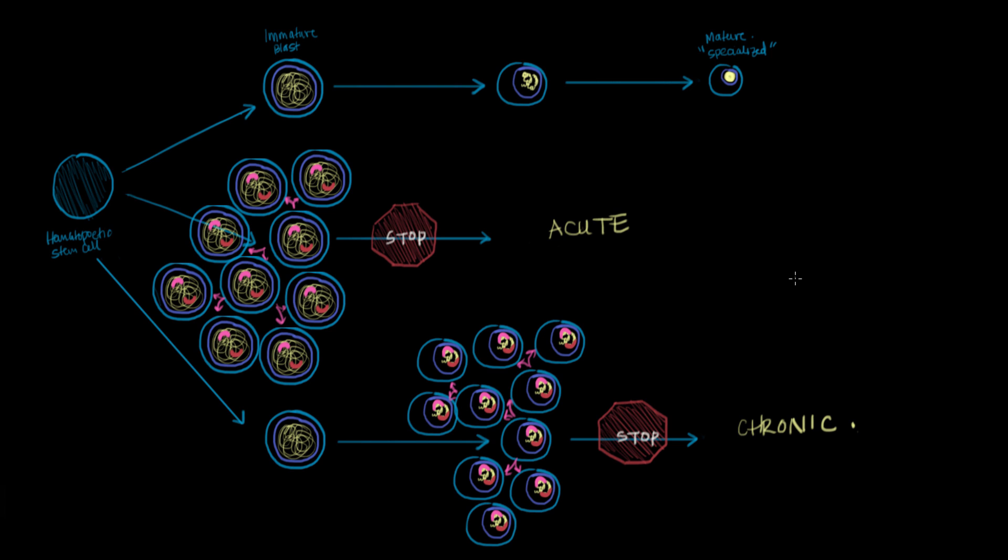So, this is the first way you can split up the leukemias. Acute versus chronic. Where acute leukemias come from the most immature cells. Chronic, a little bit more developed, a little bit more mature cells. Acute leukemias grow very rapidly. Chronic leukemias grow slowly. And acute leukemia cells bear no resemblance in appearance or in function to the mature specialized cells. Versus chronic leukemia cells resemble the mature specialized cells a little bit more in terms of appearance and what they're able to do.